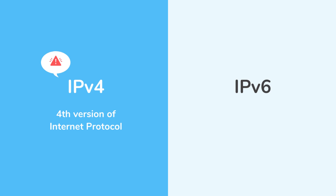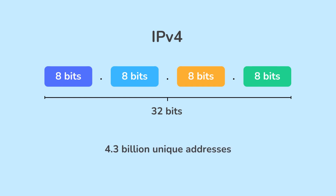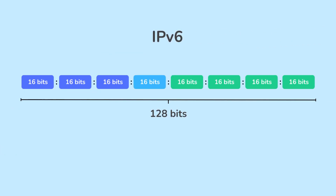IPv6, which stands for the sixth version of the internet protocol, is the newer generation designed to address the exhaustion of IPv4 addresses. IPv4 uses a 32-bit address format and provides approximately 4.3 billion unique addresses, while IPv6 uses a 128-bit address format, providing over 340 undecillion addresses.